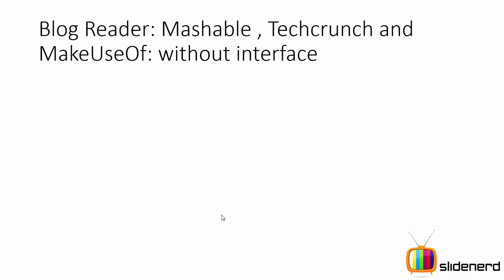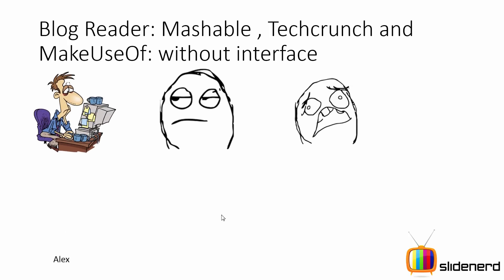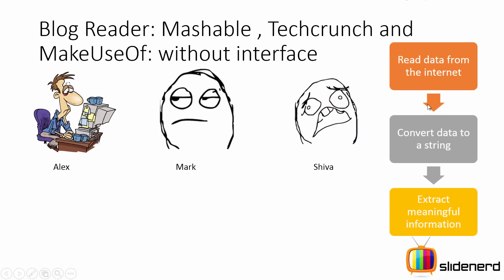First let me show you why we need interfaces with the help of a simple example. In this example we are going to try to make a blog reader app that reads from Mashable, TechCrunch, and MakeUseOf. First we are going to do this without using interfaces. The steps are: first, read data from the internet; second, convert that data to a string; and third, extract meaningful information from that string, which can be in HTML, XML, or JSON format.